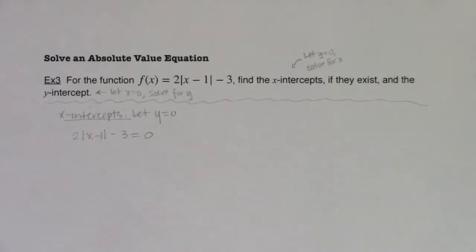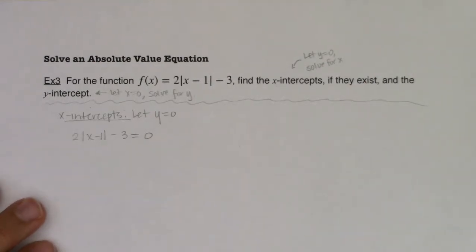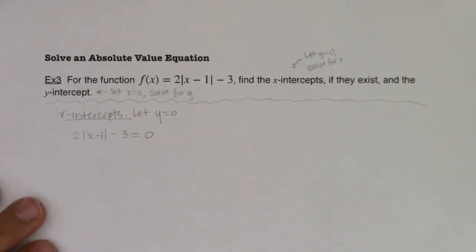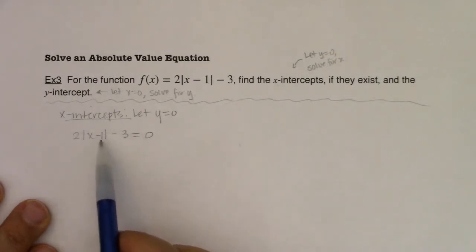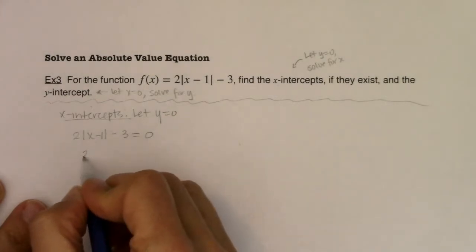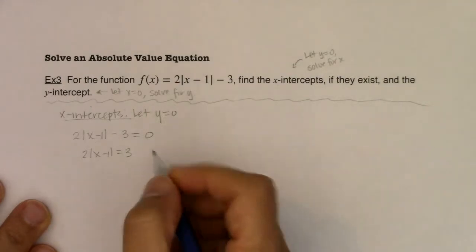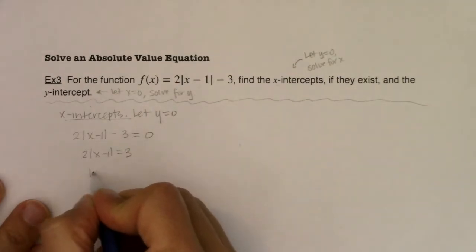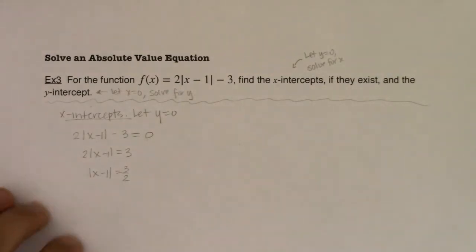If you remember from our techniques in section 2.6, whenever you want to solve an absolute value equation, you need to isolate the absolute value term first. Right now this absolute value term is not isolated — I have a 2 and a minus 3 out here. So I'm going to add 3 to both sides and get 2|x − 1| = 3, and then divide by 2, leaving me with |x − 1| = 3/2.